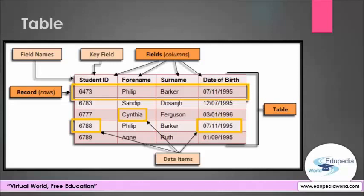Note that although there are two students called Philip Barker with the same date of birth, they have different student IDs and therefore they are different students. Attributes of entities are represented in a database table by fields, or columns. A field stores one item of data for a record. In this table, each student is represented by a record and the student attributes are stored in the following fields.